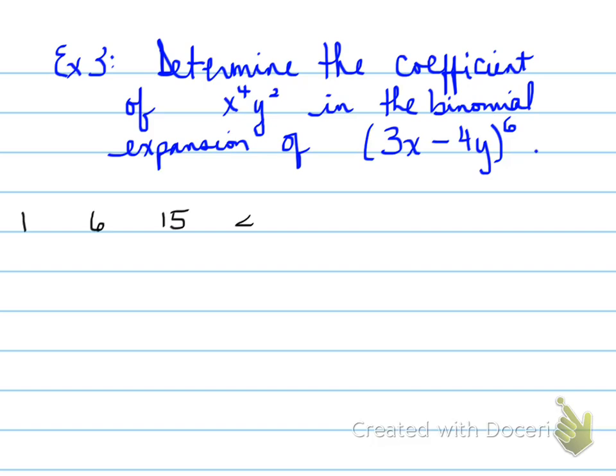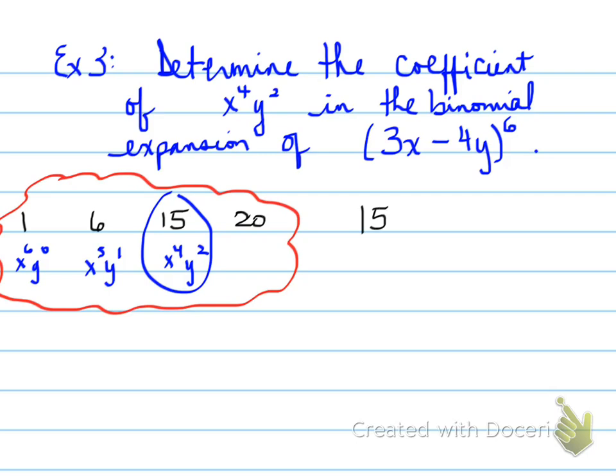So we know that this is the expansion of the sixth term. So we know the first one is going to yield us x^6 y^0. The second one is going to yield us x^5 y^1. The third one is going to deal with x^4 y squared. That's what we're looking at. This is what we're thinking in our heads. So we need the number 15 as our front number.